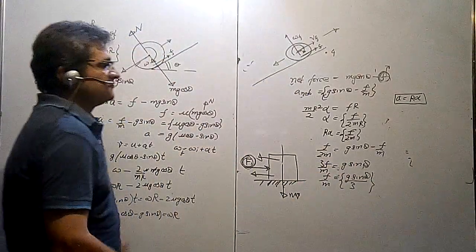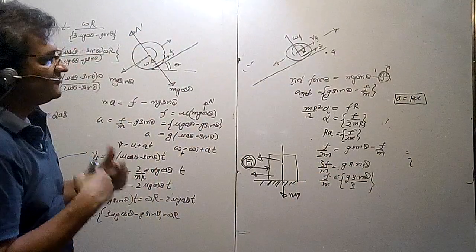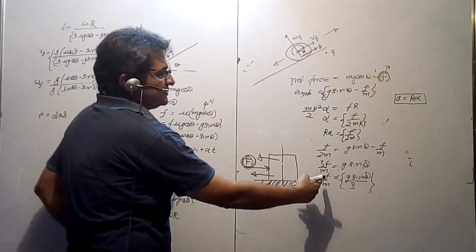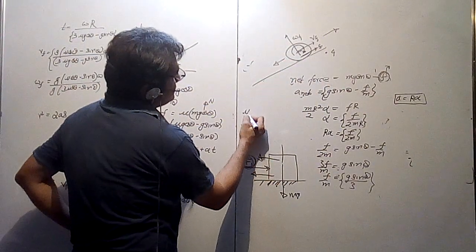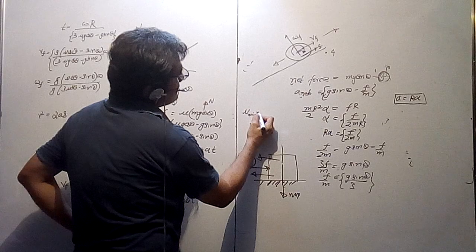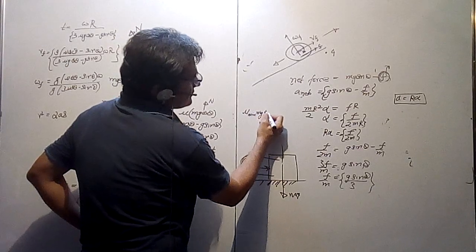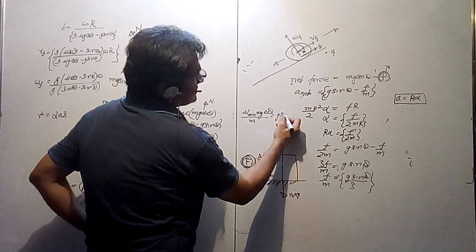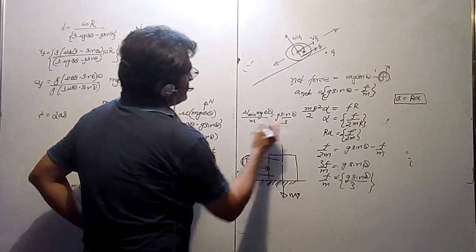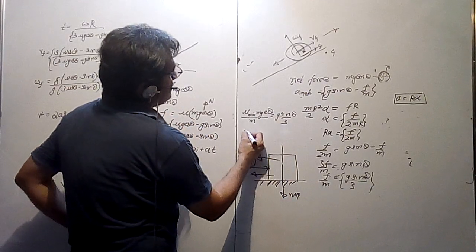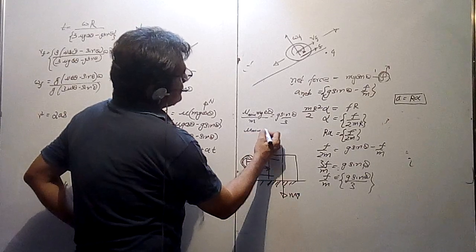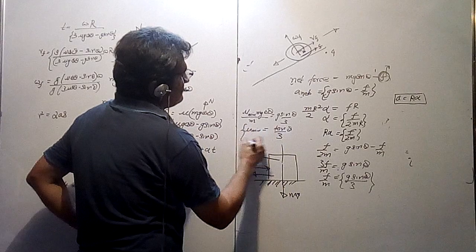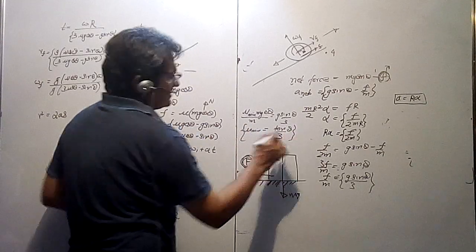If asked to find the minimum friction coefficient required for pure rolling: set F = μ_min · Mg·cos(θ), substitute into F/M = g·sin(θ)/3, so μ_min · g·cos(θ) = g·sin(θ)/3, giving μ_minimum = tan(θ)/3. That is the minimum μ required. Suppose the available coefficient is 0.4 and only 0.2 is needed — the friction force used is determined by μ_minimum, not by the available μ. This will be derived separately in another lecture.